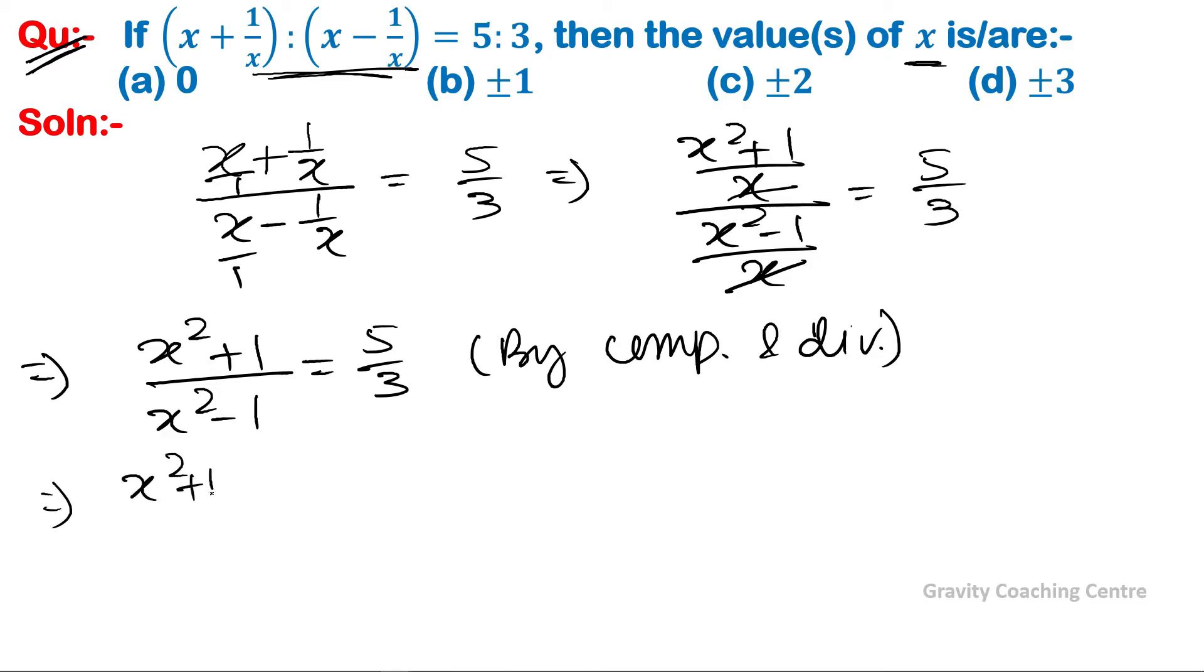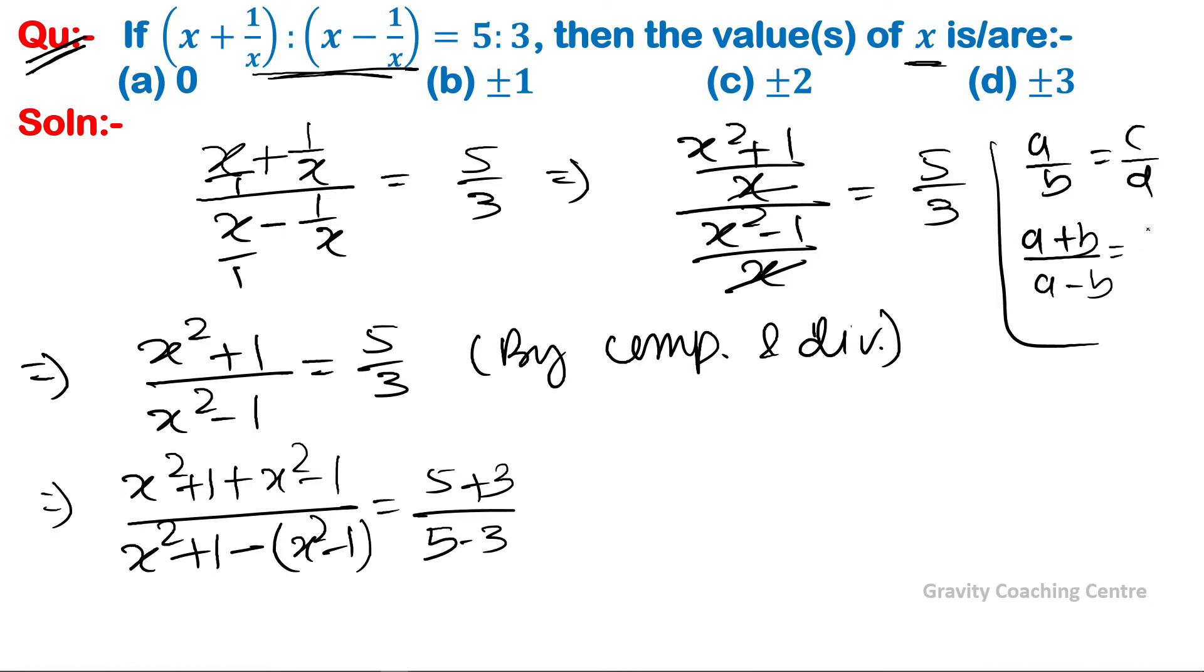(x² + 1 + x² - 1)/(x² + 1 - x² + 1) = (5 + 3)/(5 - 3). In componendo and dividendo, if a/b = c/d is given, then we write it as (a + b)/(a - b) = (c + d)/(c - d). So if we write this, it implies that...